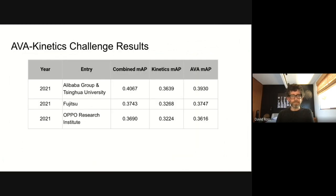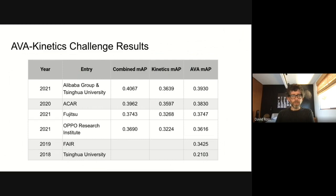The winner achieved a combined MAP of 0.4067. Looking at the breakdown between the Kinetics and AVA parts of the data, the Kinetics dataset is proving a little more challenging than the original AVA data. This year's winner improved over the previous year's winner by about one point of MAP, and last year's winner still scores second in the overall leaderboard. Thanks again to all the winners on the AVA Kinetics Challenge, and I'll pass it over to Suresh.